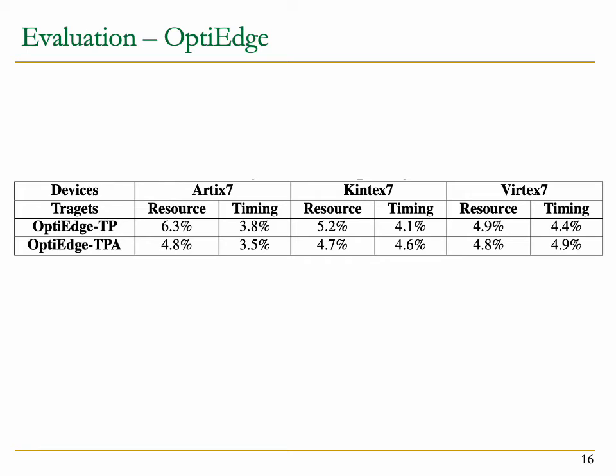This table shows the estimation errors of timing and utilization calculated by OptiEdge for two different optimization goals — throughput and throughput-to-area — using a stacking approach. Results show that the average error of OptiEdge is only around 5%. Later, I describe how this estimator can be used for design space exploration to help find optimal implementation results for our hardware accelerator malware detectors.